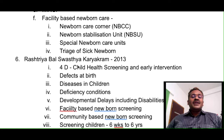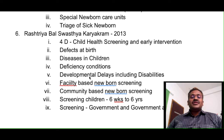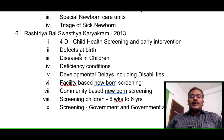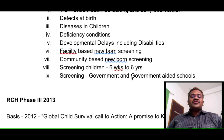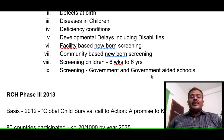The last component of RCH phase 2 is Rashtriya Bal Swasthya Karyakram (RBSK), introduced in 2013. Under this scheme, birth defects and developmental problems of children were given more importance. Remember with 4D: defects at birth, diseases in children, deficiency conditions, and developmental delays included in disabilities. It covers facility-based newborn screening, community-based newborn screening, screening children 0–6 years, and screening children in government and government-aided schools.